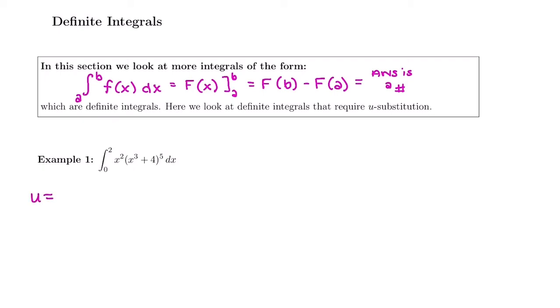So we're going to let u be the factor that's being manipulated. In this case, the second factor: x³ + 4. We're going to take the derivative of that. Derivative of u with respect to x: derivative of x³ is just 3x². Derivative of 4 is 0. And then we're going to get du by itself by multiplying by dx.